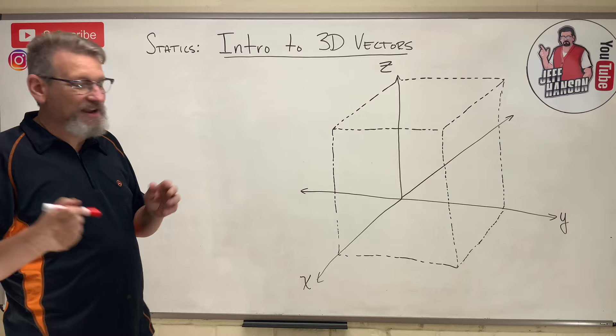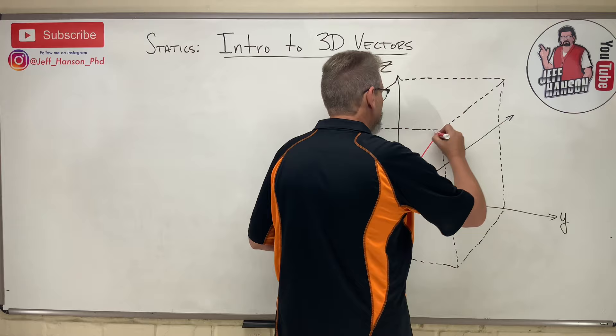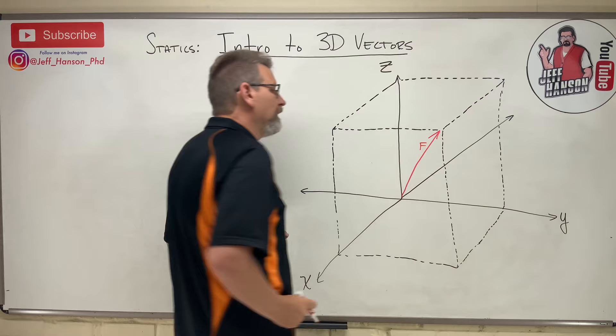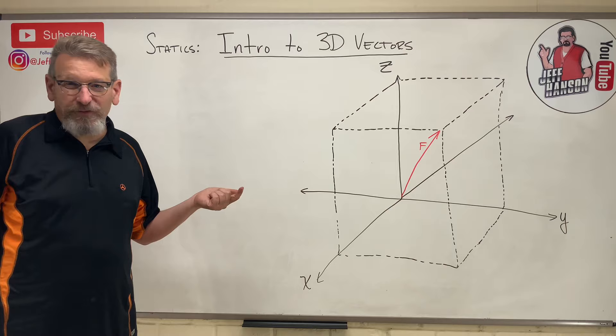Don't be scared of 3D, because the whole point is just to take a 3D vector — such as this vector here, some vector that goes from the origin to that opposite corner of that cube. Take that 3D vector, we'll call him vector F, and break him into components: i-hat, j-hat, k-hat.